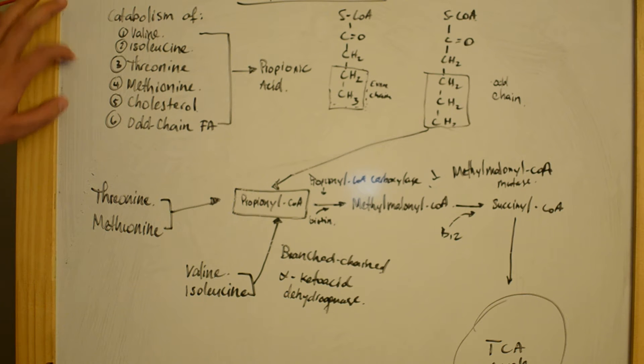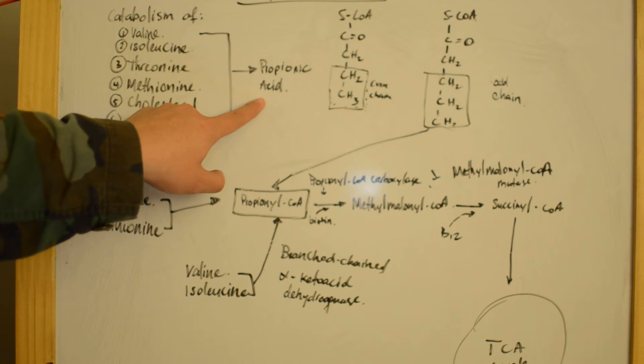The catabolism of valine, isoleucine, threonine, methionine, cholesterol, and odd-chain fatty acids leads to the formation of propionic acid.